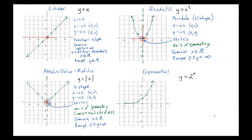Last one — exponential, which is a different kind of beast. For the shape, sometimes they call it an L-shape, but I like to call it the hockey stick. It doesn't ever go vertically like an L does, so L is a bit of a misnomer. It keeps going up at an angle, kind of like a hockey stick.